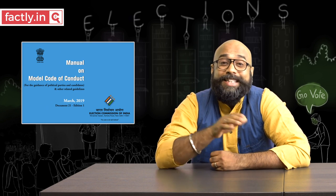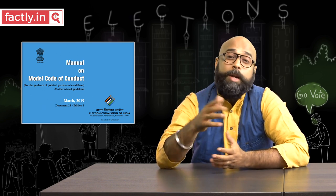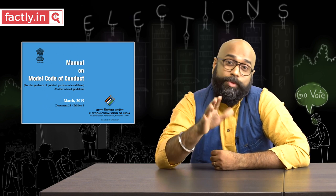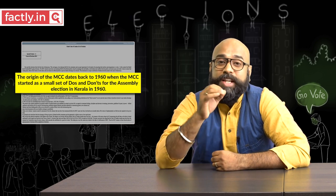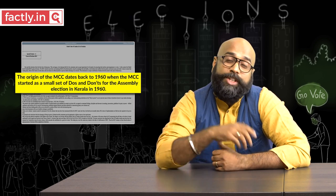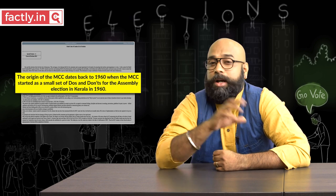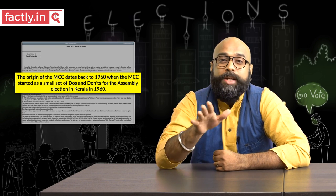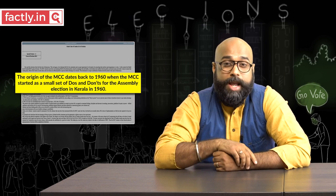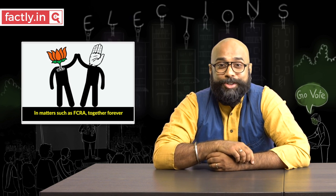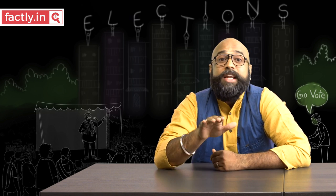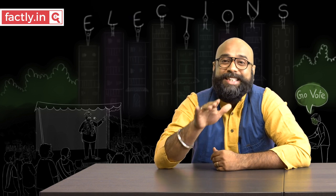The surprising thing here is that the idea of the MCC actually came from the political parties themselves. Started in the 1960s by political parties from Kerala, the MCC covers important aspects of electioneering like meetings and processions, speeches and slogans, and posters and placards. It's not only in the old days that political parties came together to achieve a common end — it happens even today, like the BJP and Congress coming together to amend the Foreign Contribution Regulation Act. After the 1960s, the MCC was gradually adopted by other political parties and finally became part of the Election Commission of India, or ECI's, executive powers.